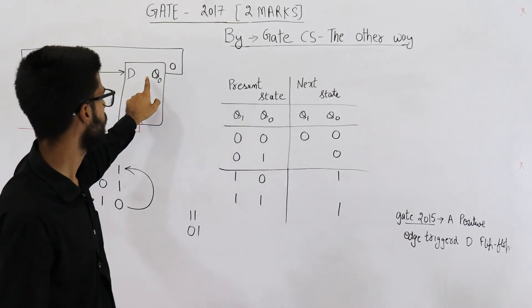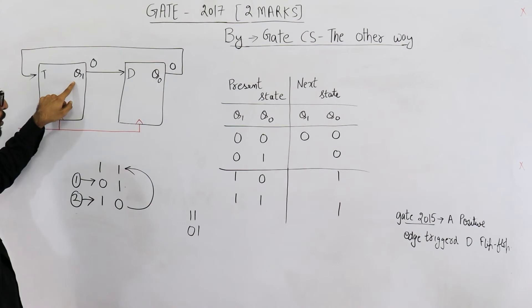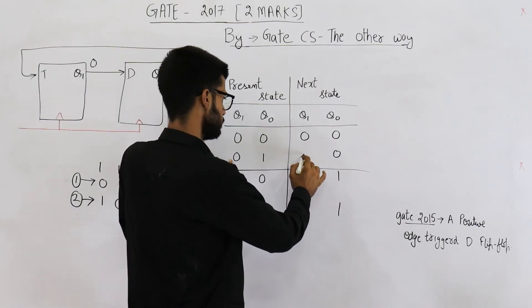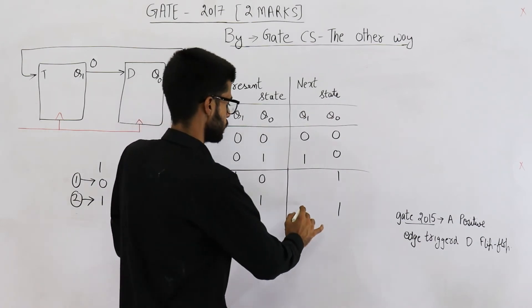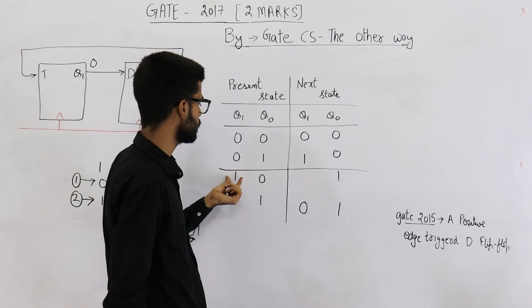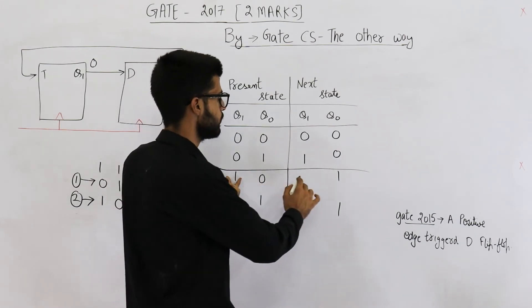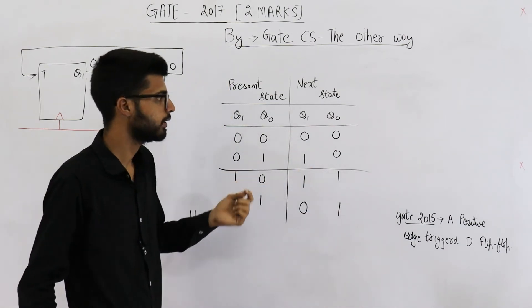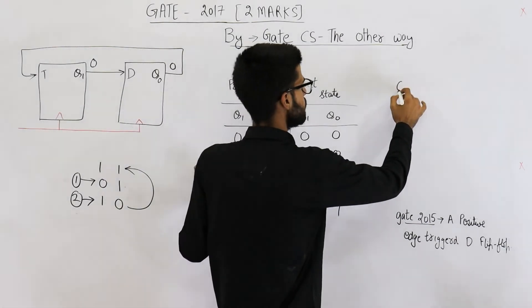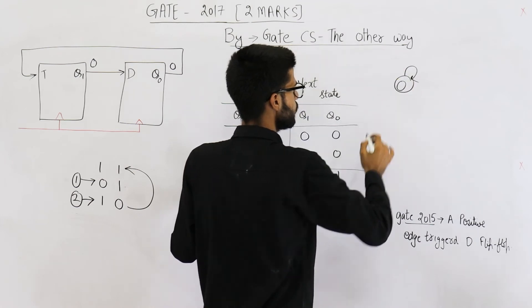And whenever Q0 is 1, whenever this value is 1, we have to toggle Q1. It is 1 here, so toggle this one. It is 1 here, so toggle this one also. Q0 is 0 here, so we don't need to toggle. Just keep this one as it is. From here, you can see the counting sequence is like this.